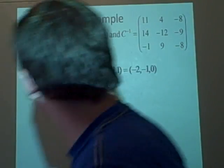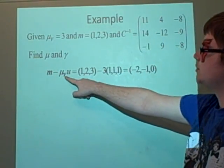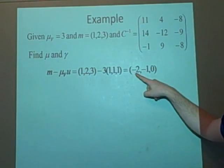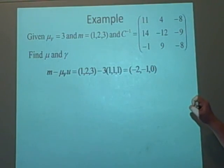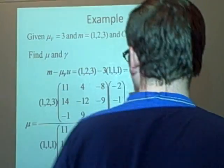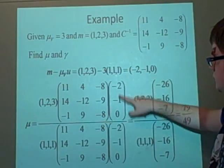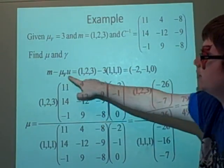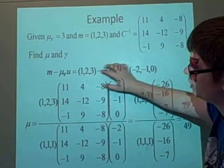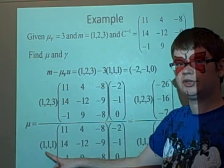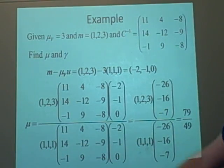So first we do the m minus mu v times u. We've got all the components here, which gives us minus two minus one zero. We're going to put that into our formula for mu, which was m times c inverse times this transpose. So instead of writing just transpose here, I've just done it normally just to save myself a bit of space. And underneath, we're just multiplying by u instead.